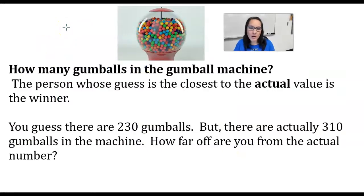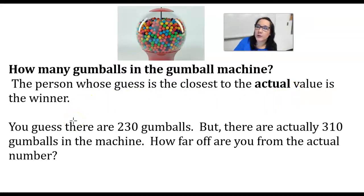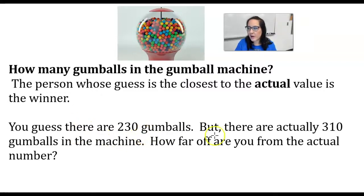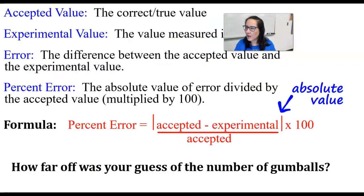Now we're going to talk about percent error. How many gumballs are in the gumball machine? The person whose guess is closest to the actual value wins. So how do we figure out who is closest? If you guess 230 gumballs but there are actually 310, how far off are you? We have an equation that lets us calculate this.